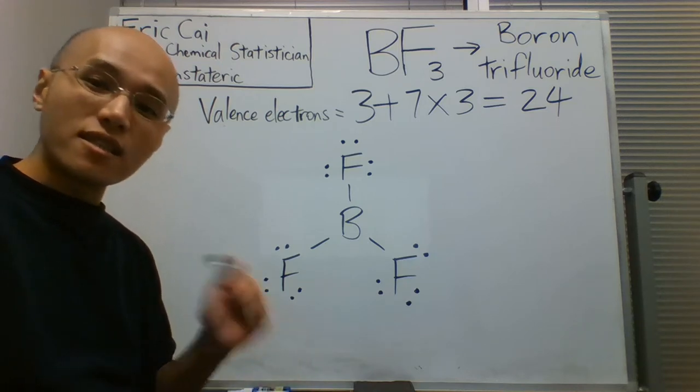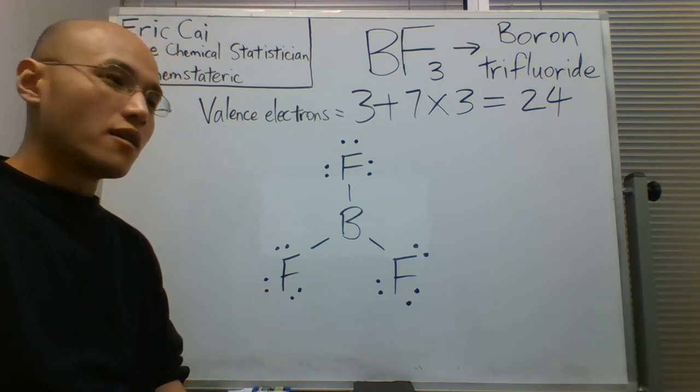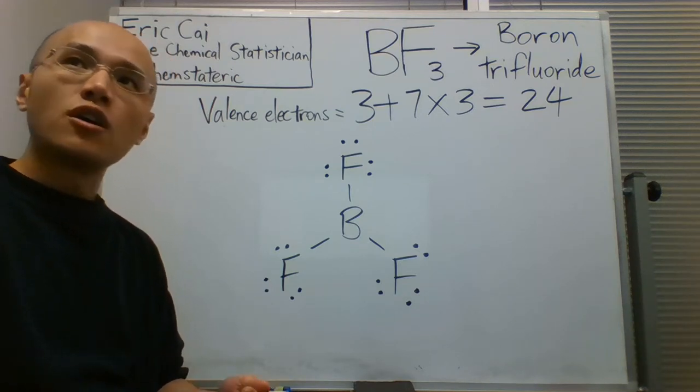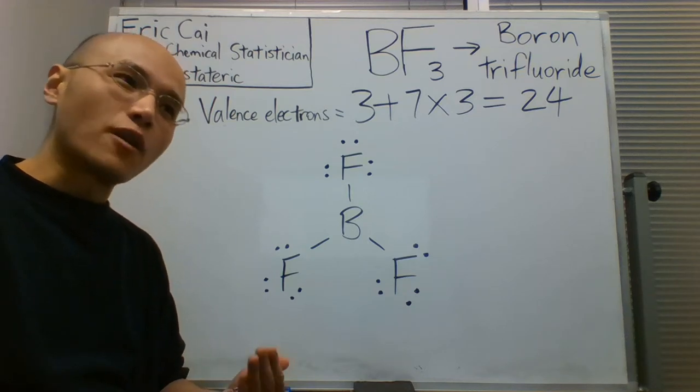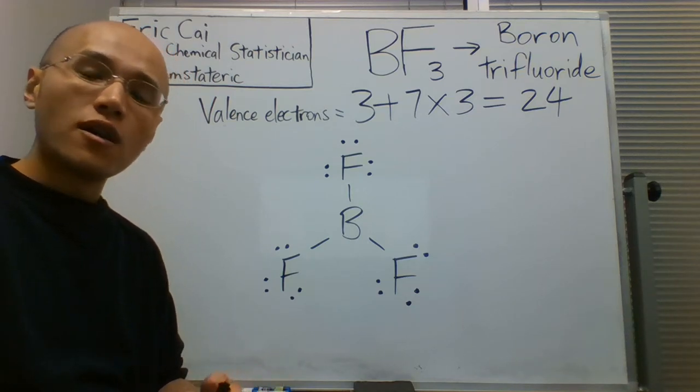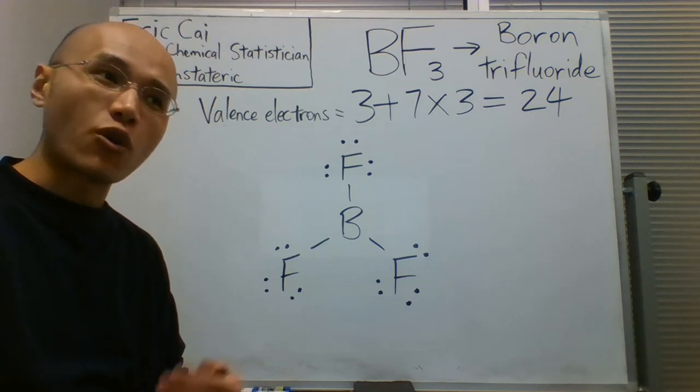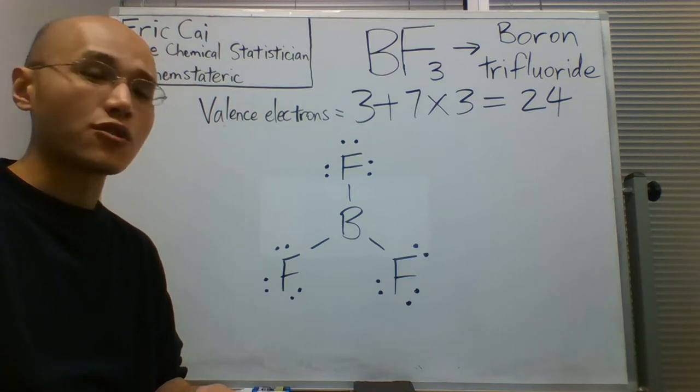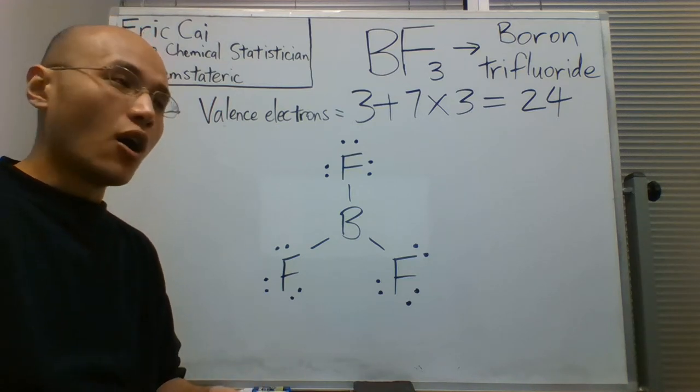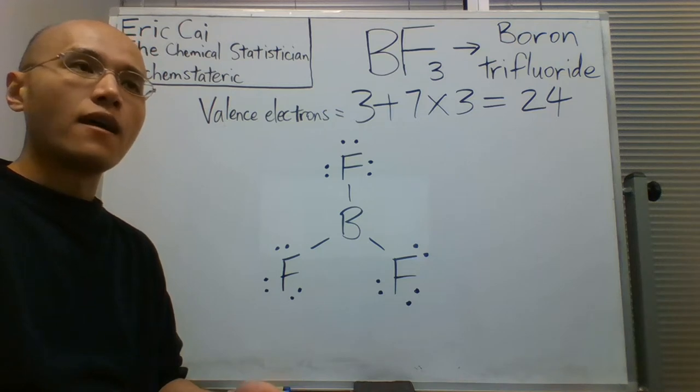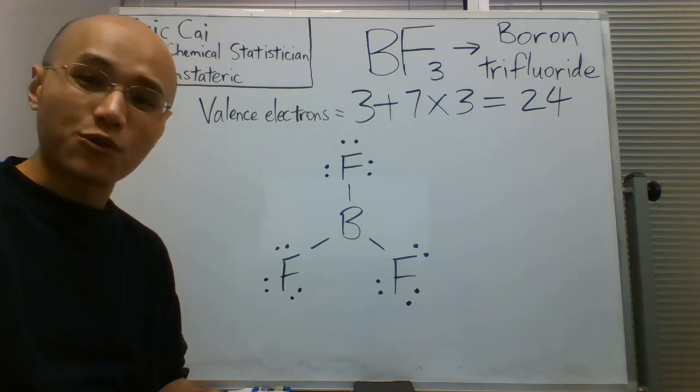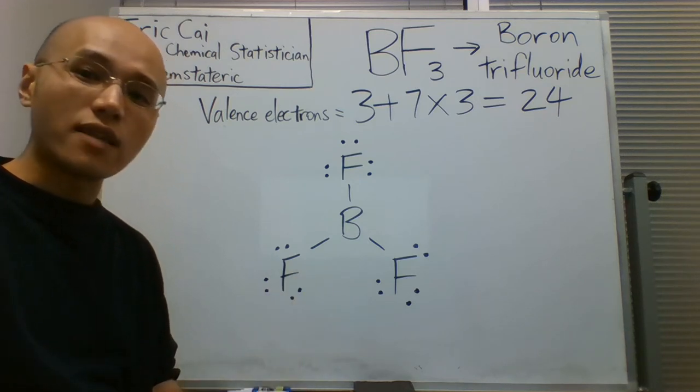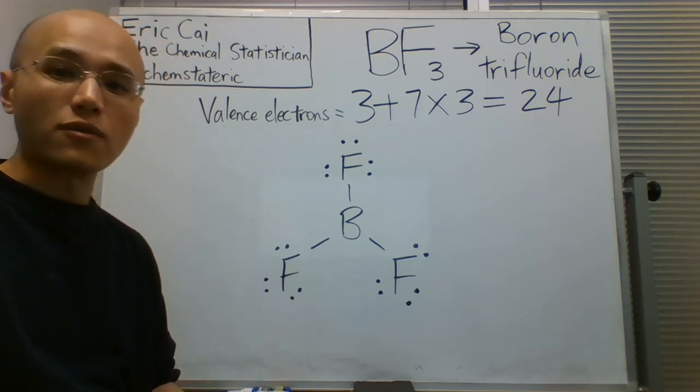This is an exception to the octet rule. The octet rule says that for atoms with atomic numbers 20 or below, they usually follow the octet rule, which means that they require eight electrons around them to be stable. Those eight electrons could be lone pair electrons or electrons in bonds. However, there are some exceptions to that rule, and here is a classic example. Boron in this case is stable with six electrons around it, not eight.